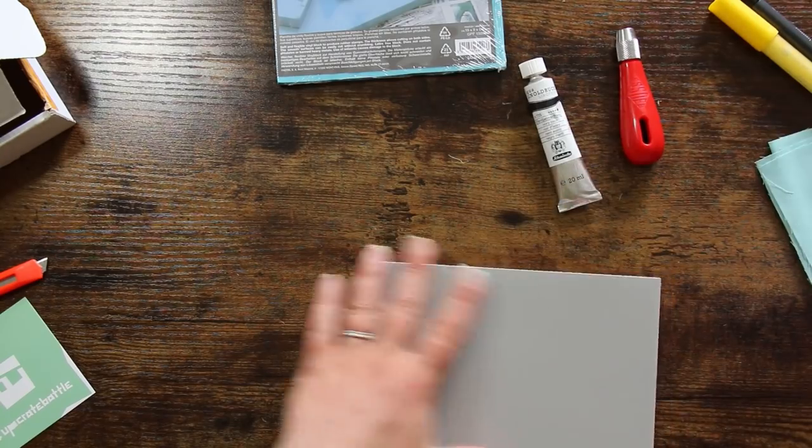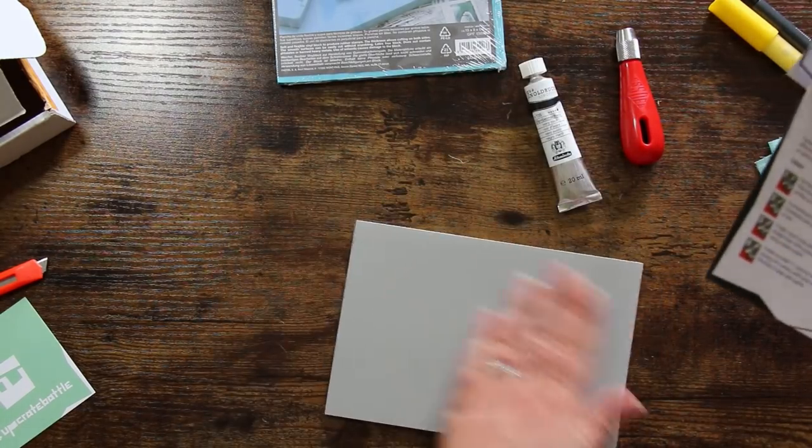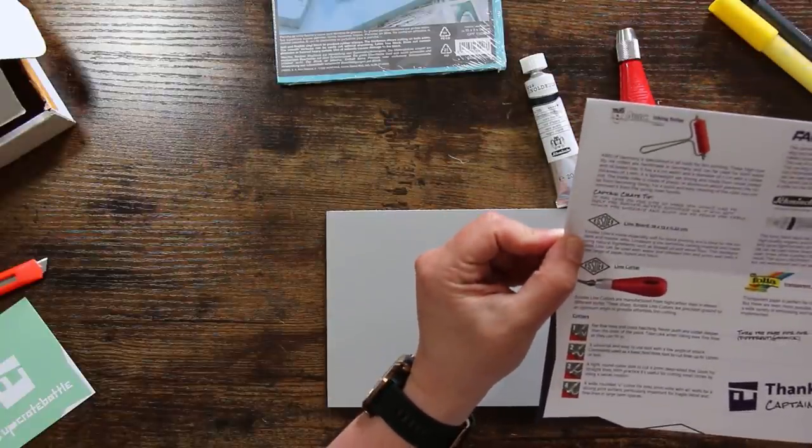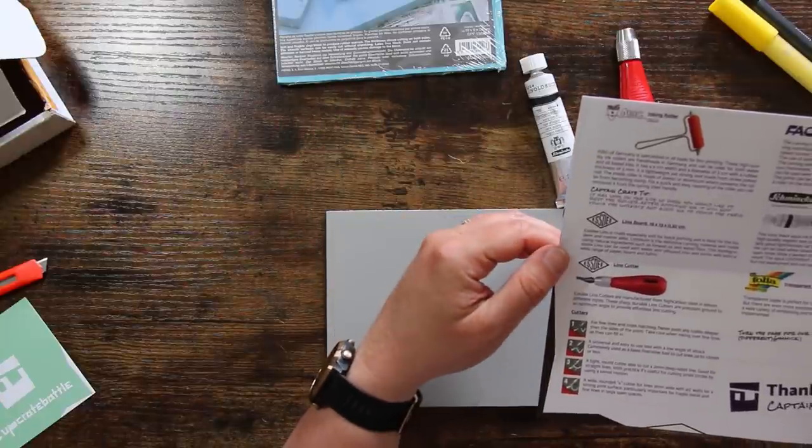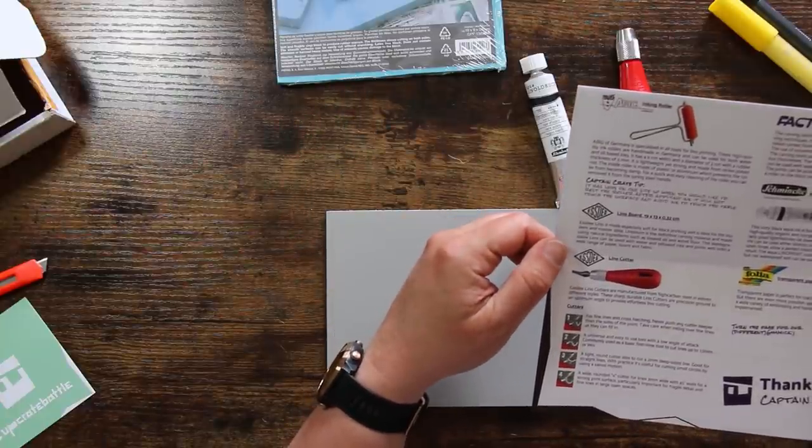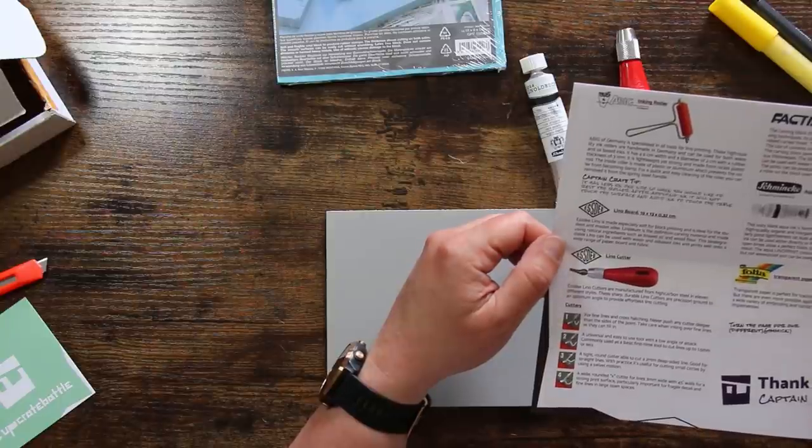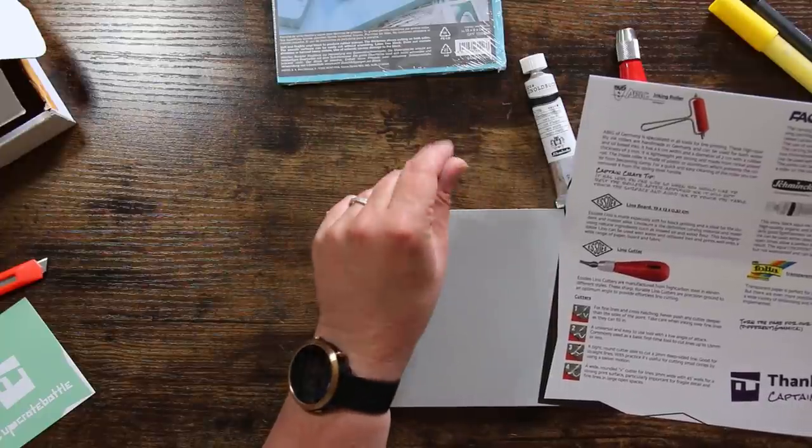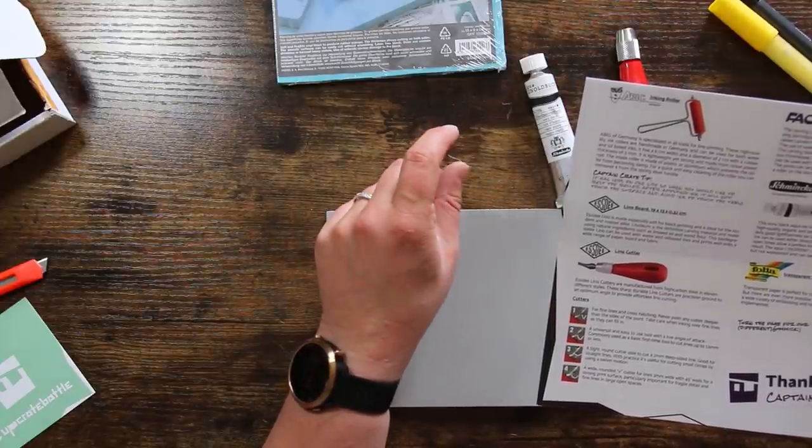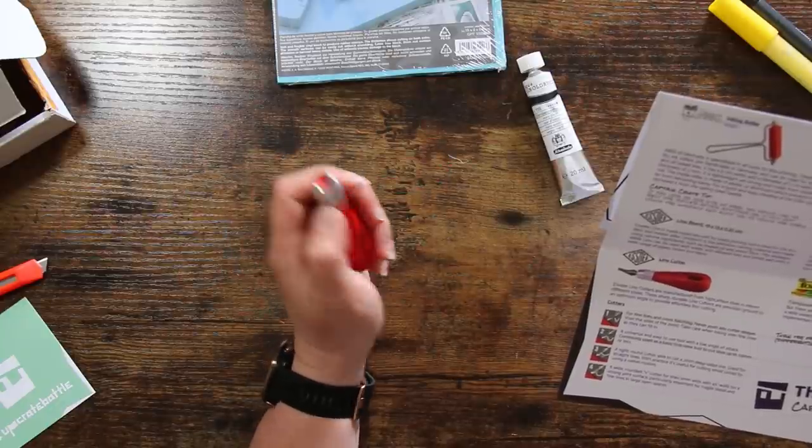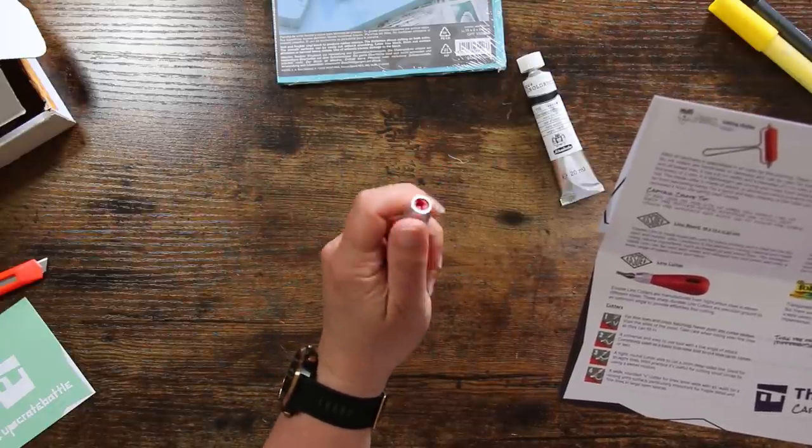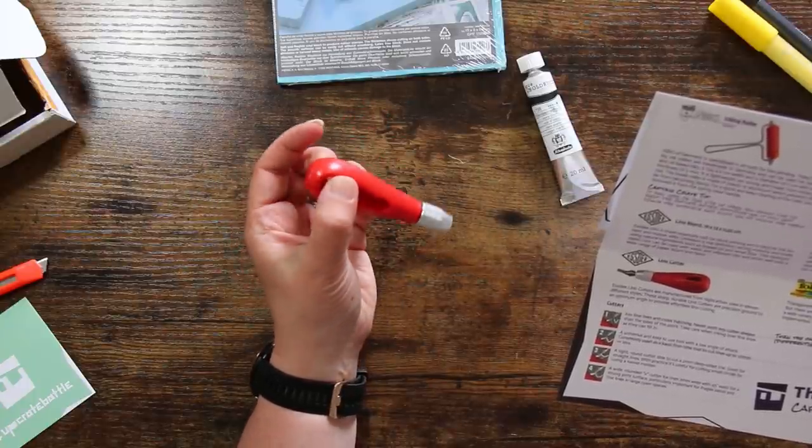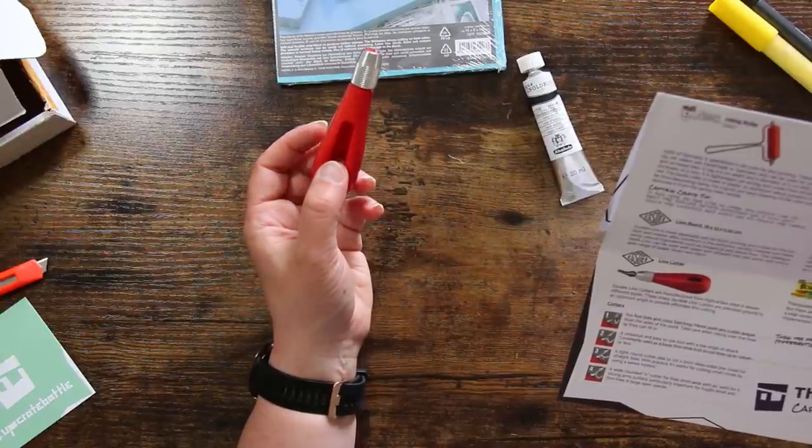Okay let's take it out of the package. There's this little kind of like pokey out bit and that's so that you can rest it standing up on the table and it's going to stop this part actually making contact with your surface so that's quite cool. SD lino is made especially soft for block printing and is ideal for the student and master alike. Linoleum is the definitive carving material and made using natural ingredients such as linseed oil and wood flour.